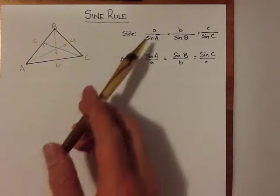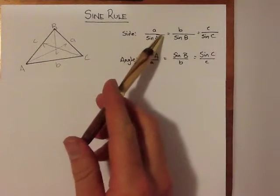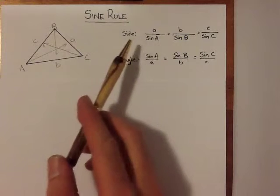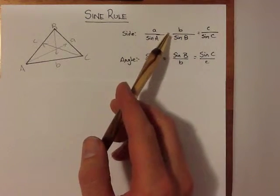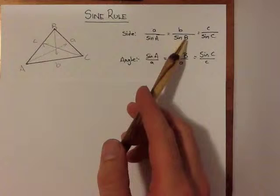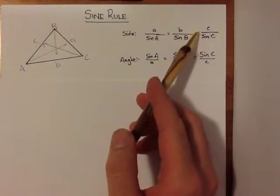The sine rule states that side A divided by sine angle A is equal to B divided by sine angle B, and side C is equal, which equals side C divided by sine angle C.